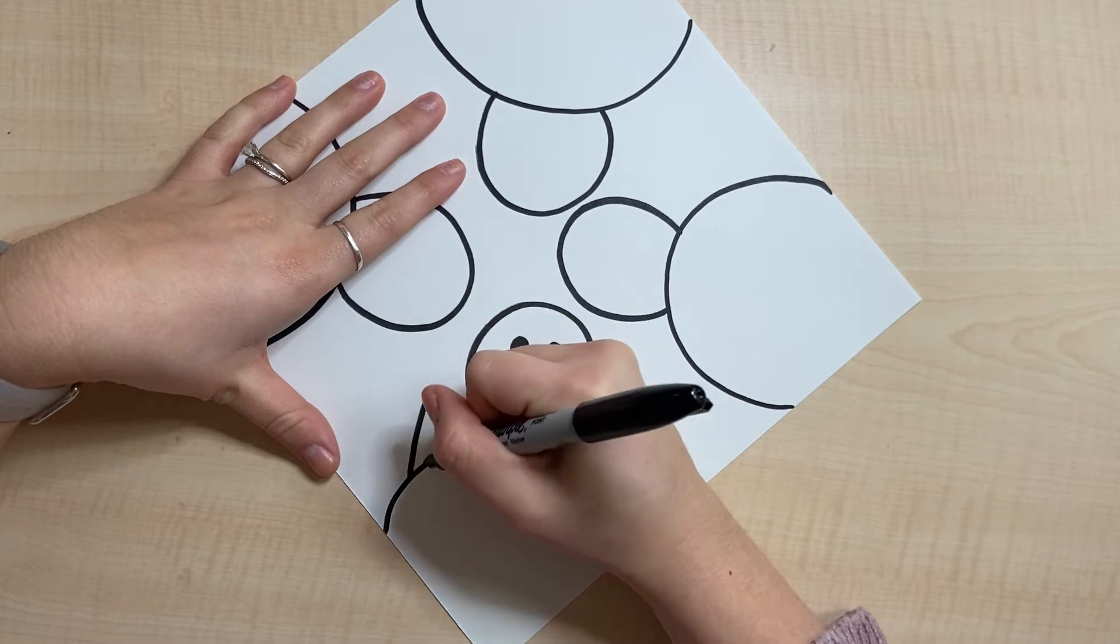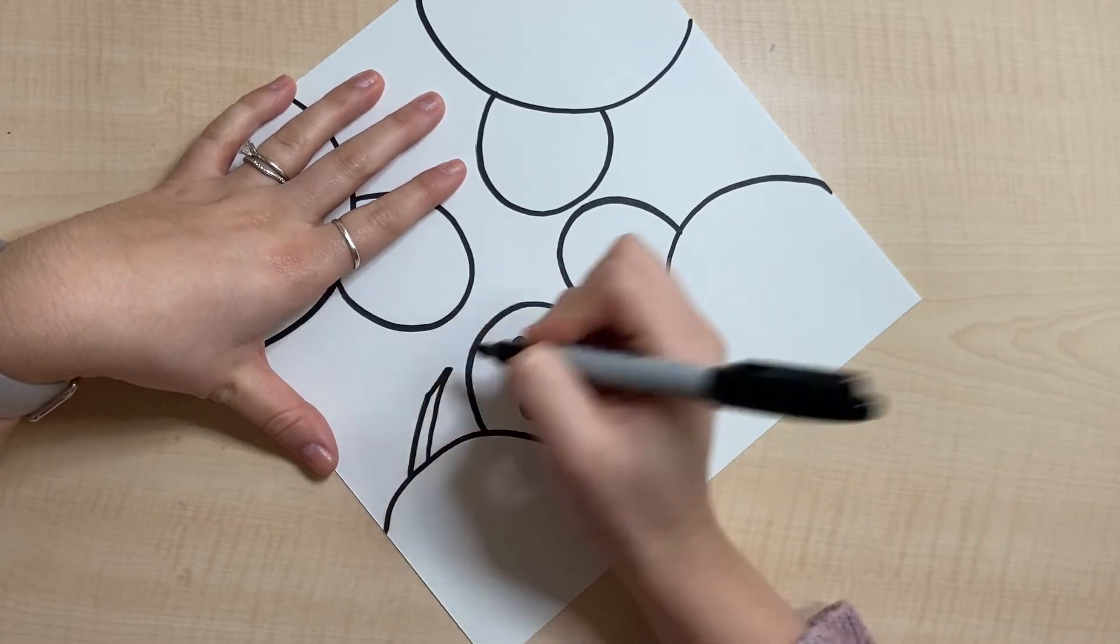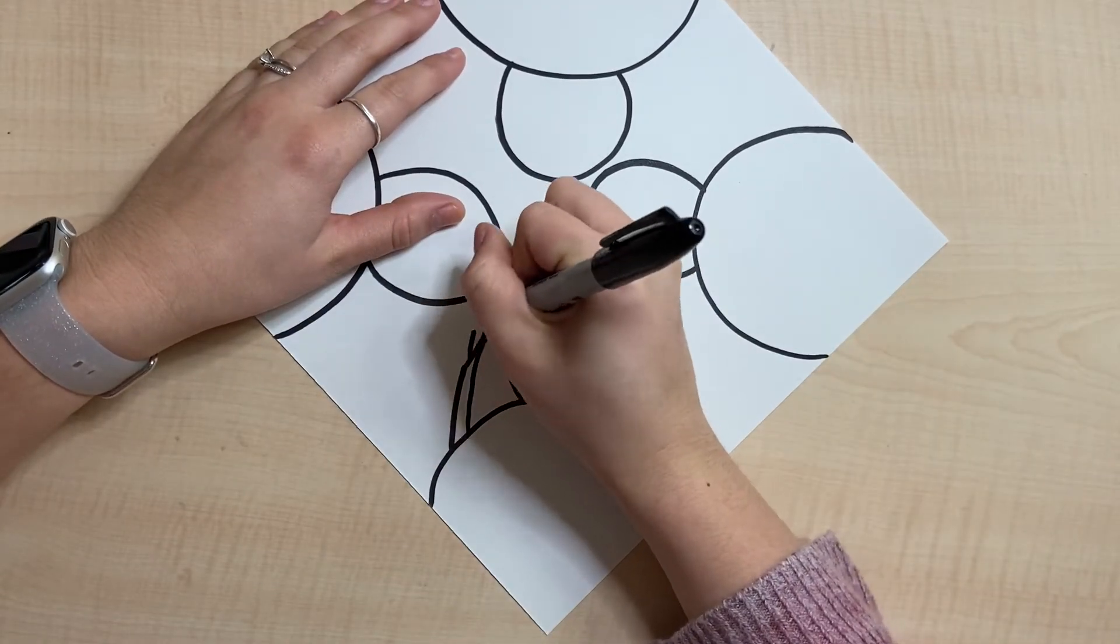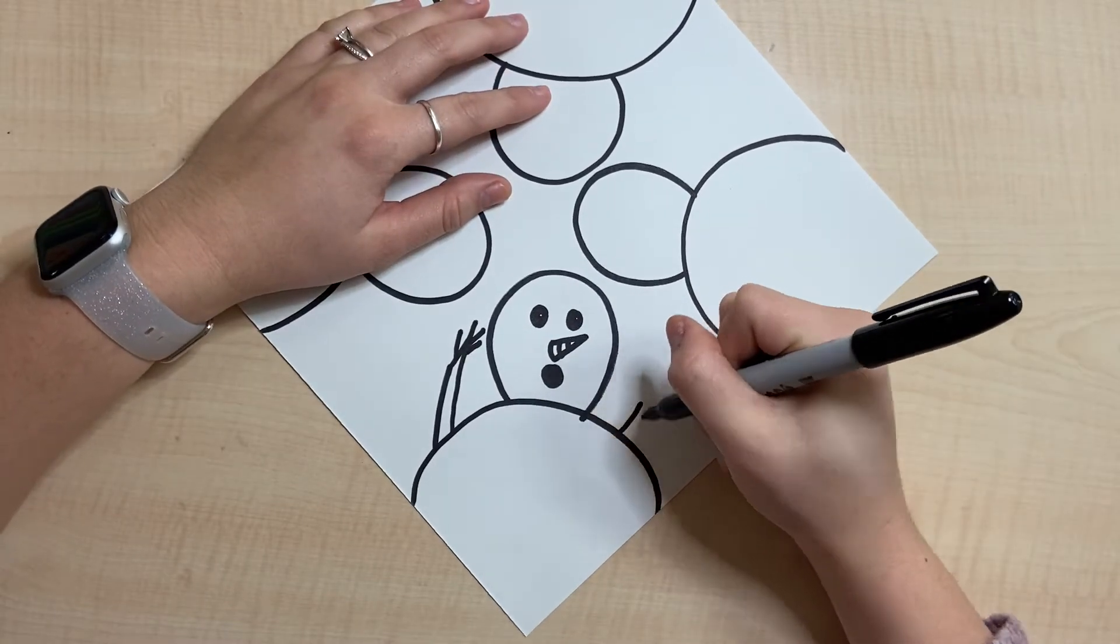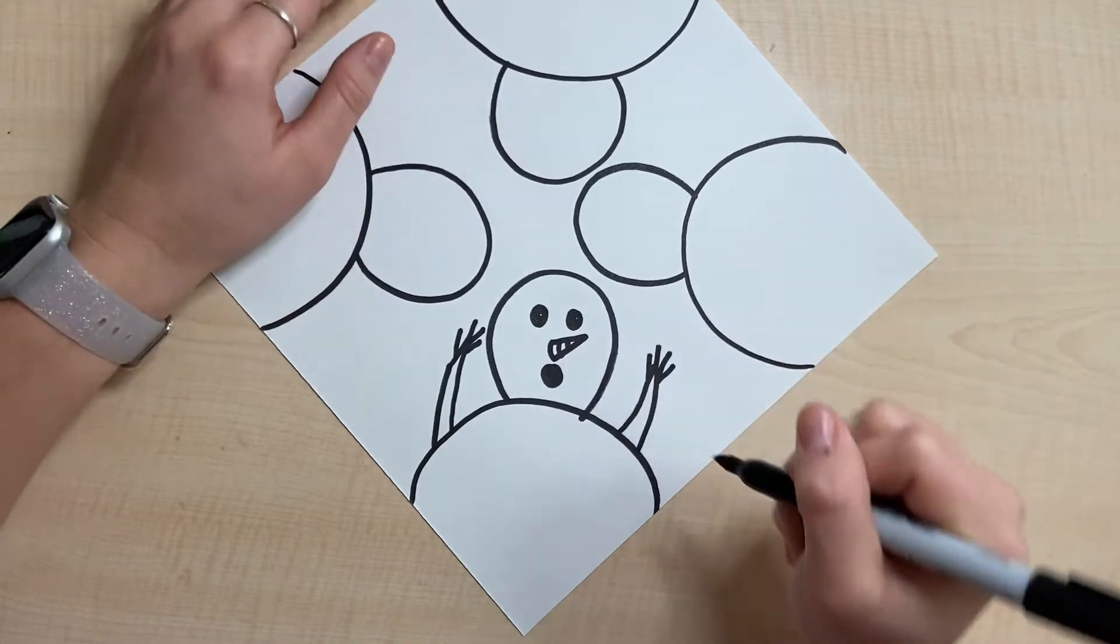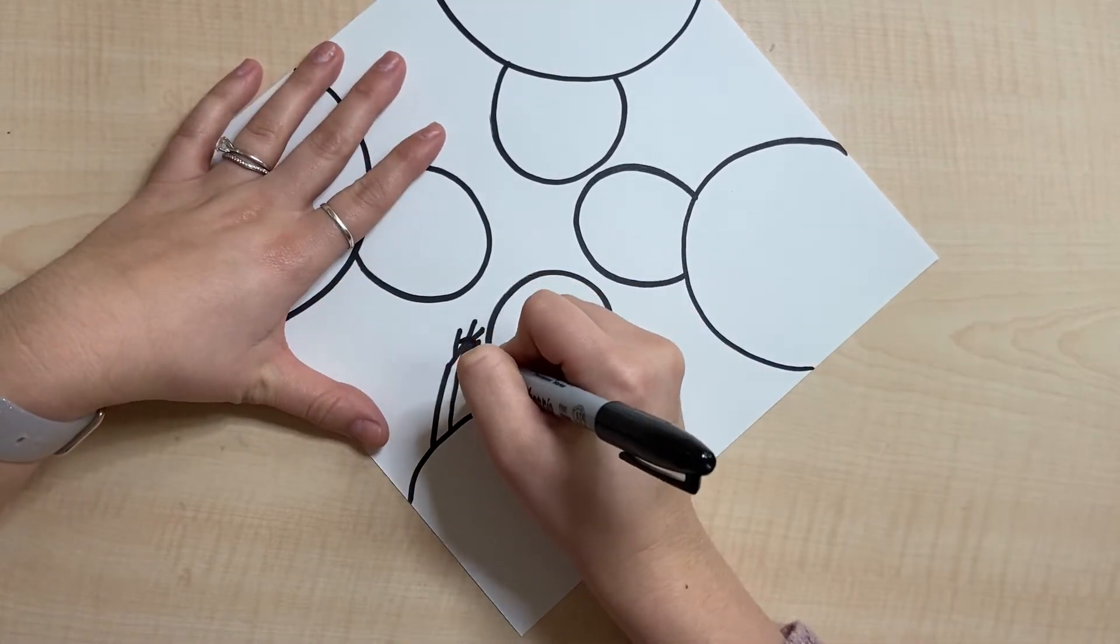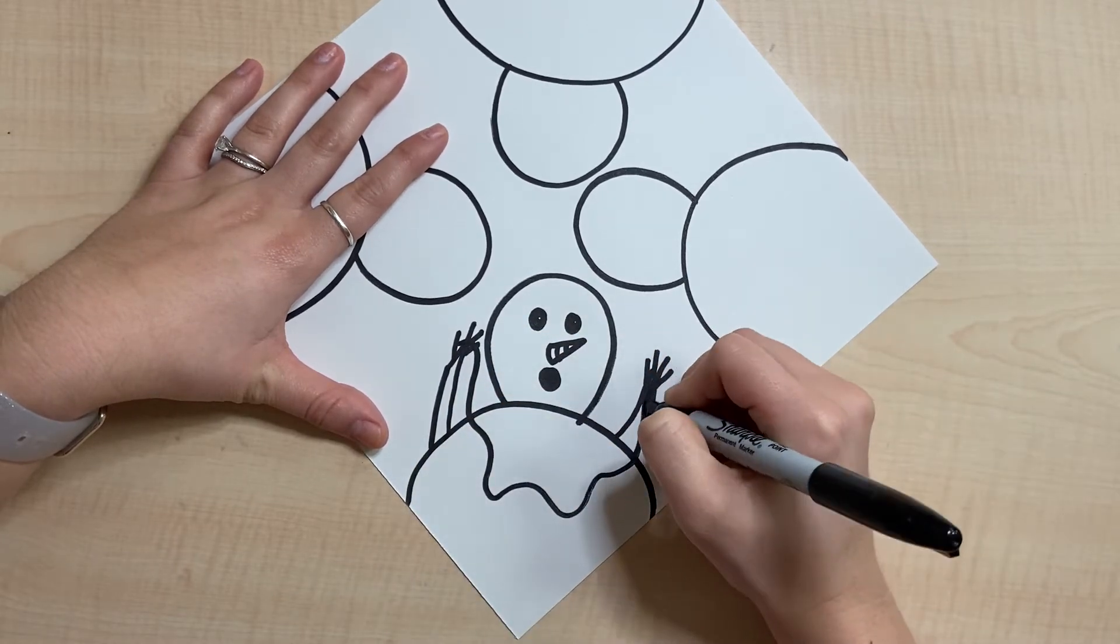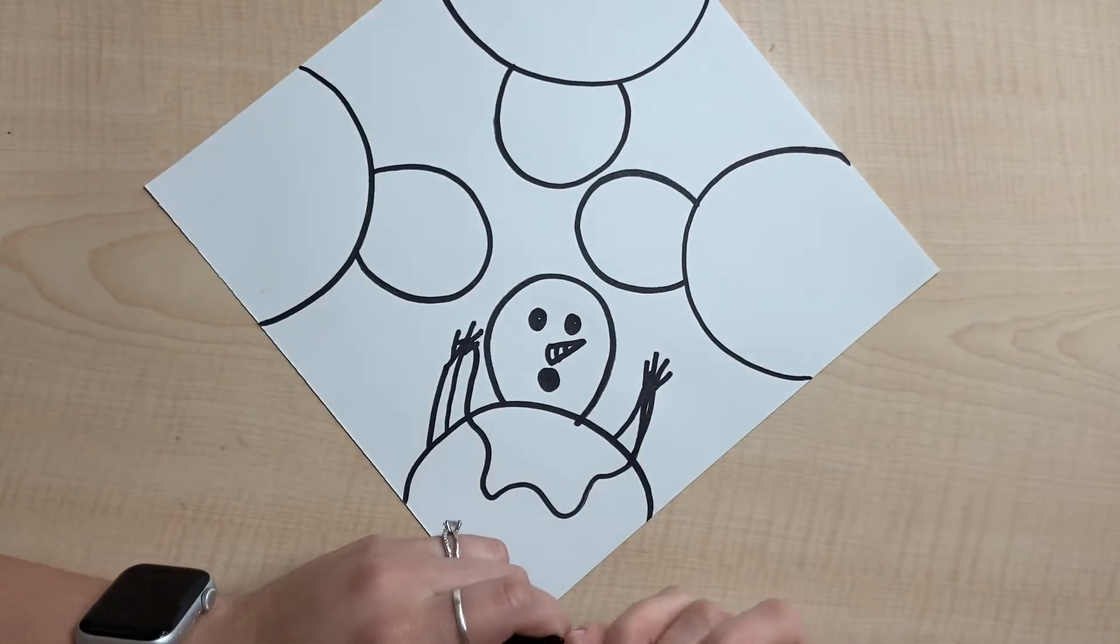Let's draw some arms, some snow people arms. Two lines up and then just draw some little stick fingers. This one's gonna be holding a string of lights because why not. Maybe this snowman is taking down their holiday decorations.